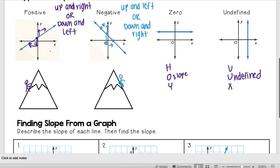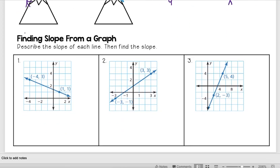Positive, negative, zero, or undefined? Well, I see that this one looks like it's going downhill. So if I were to draw my little guy again, he is skiing down the hill, so that means this one's negative.